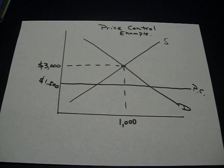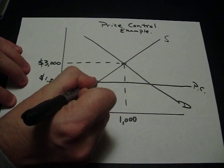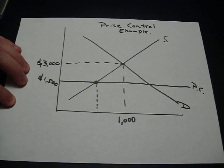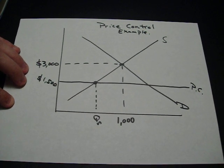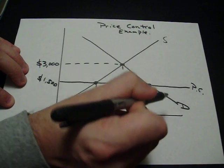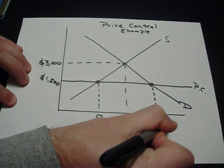So we just have to read the graph to see what happens. Where that price ceiling hits the supply curve, right here, trace down. Since that was the supply curve, it clearly shows quantity supplied. Next, where that price ceiling hits the demand curve, trace down. Since it was the demand curve, it shows quantity demanded.